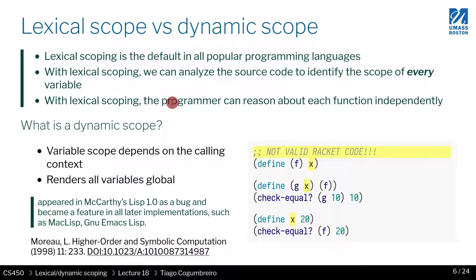Let's introduce dynamic scoping. The idea actually started as a bug in Lisp 1.0, the original Lisp. Lisp is the ancestor of Racket, where this idea of functional programming with lots of parentheses comes from. There was a bug in the implementation, and the effect was essentially dynamic scoping, which means when you call f, f refers to...